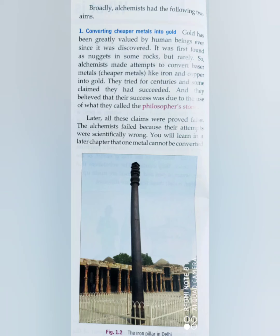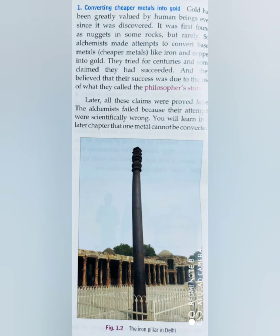In the olden days, gold was greatly valued by human beings. Alchemists wanted to convert baser — meaning cheaper or inexpensive — metals like iron and copper into gold. They tried for many centuries and claimed they succeeded, saying they found something called the Philosopher's Stone. But later, all their claims were proved false because their experiments were not scientifically proved, and it is impossible to convert one metal into another metal.